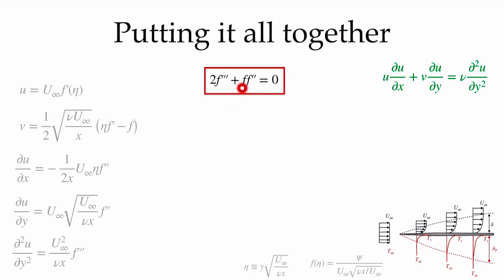The resulting ODE is: 2f''' + f·f'' = 0. This single third-order ordinary differential equation represents both the first-order PDE for conservation of mass and the second-order PDE for conservation of momentum. Through the use of the similarity parameter eta, which collapses all velocity profiles onto a single one-dimensional curve, we converted two coupled PDEs into one third-order ODE that is very easy to solve.